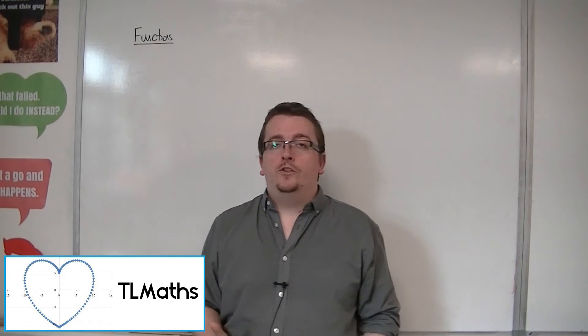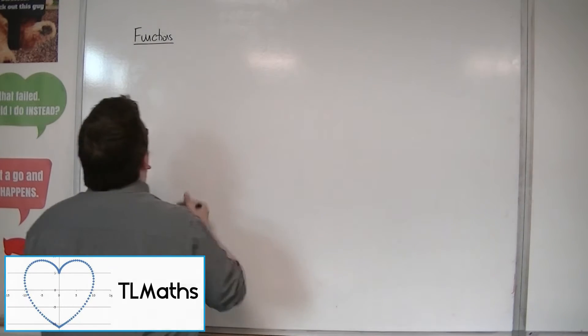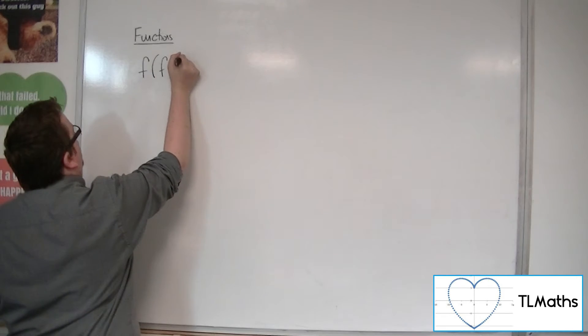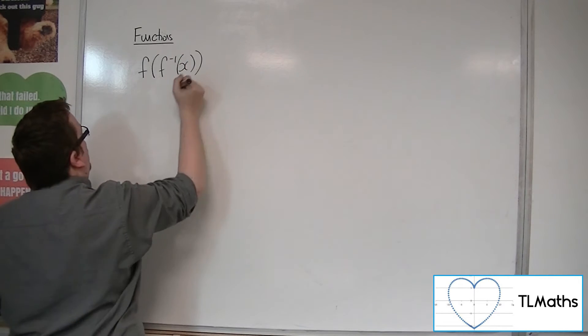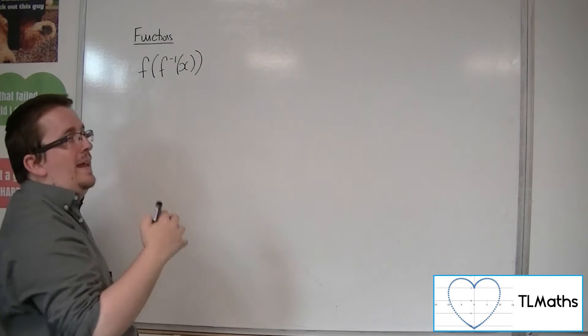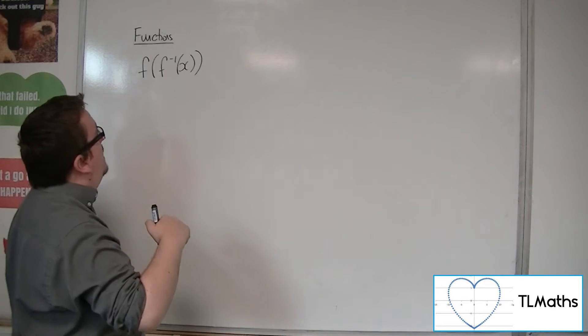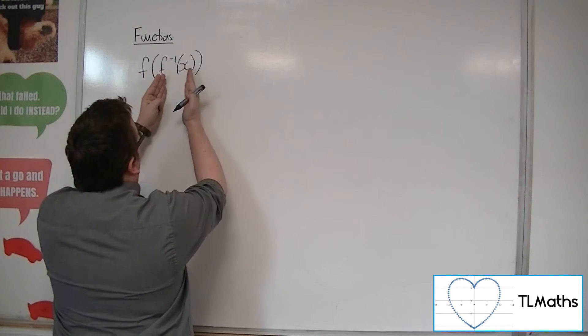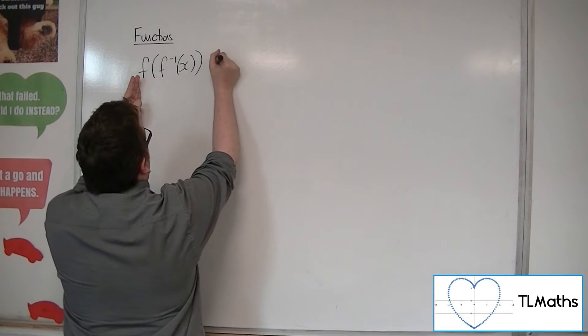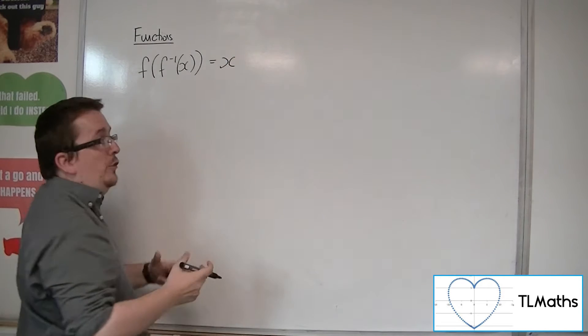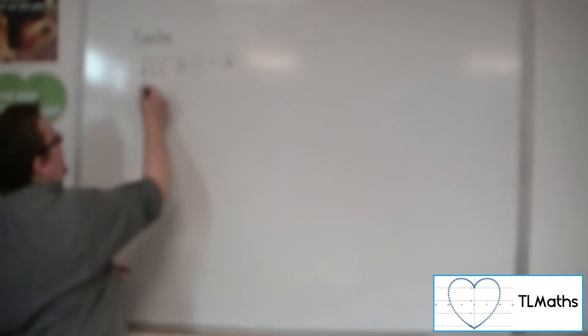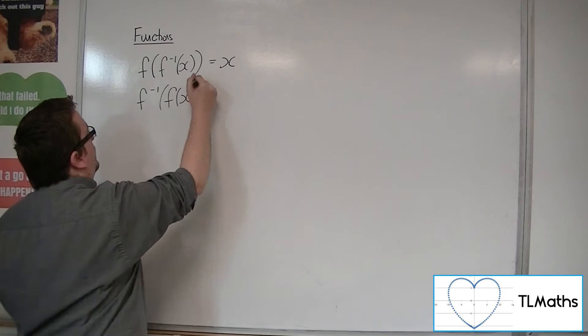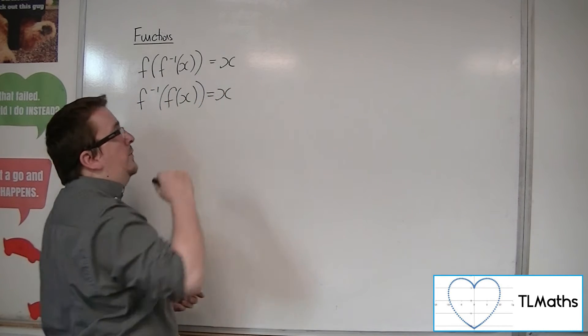The consequence of inverse functions is that if you have f of f minus 1 of x, where the f minus 1 is the inverse function of f, then if you use a composite function, where this function is going into f, then you will have x as a result. Likewise, if you put f into its own inverse function, then you get x also.